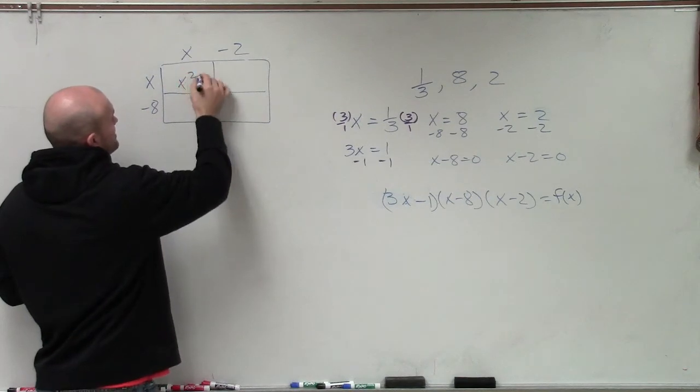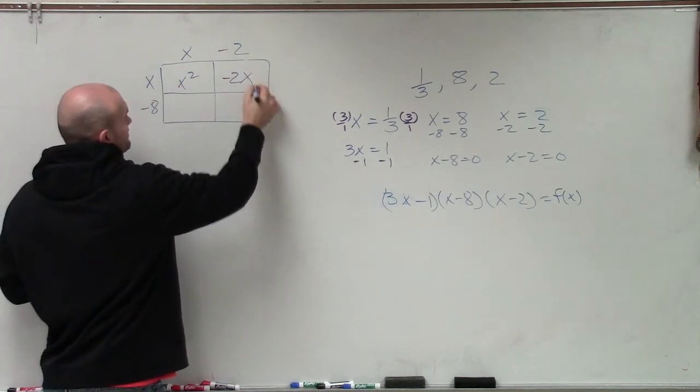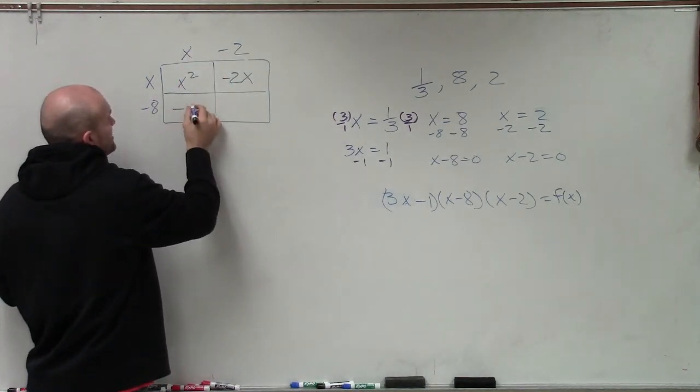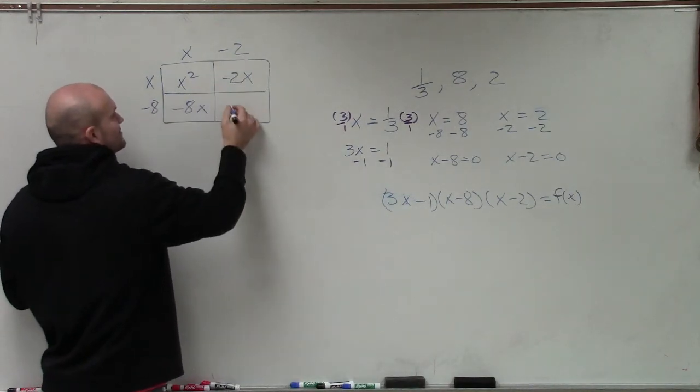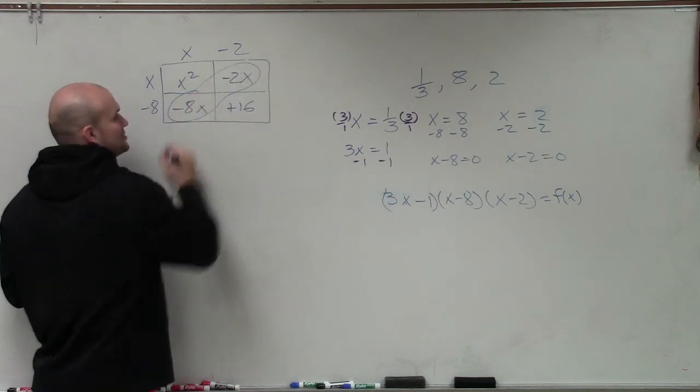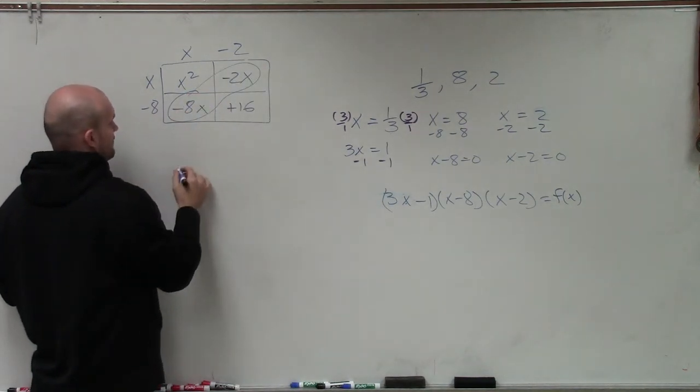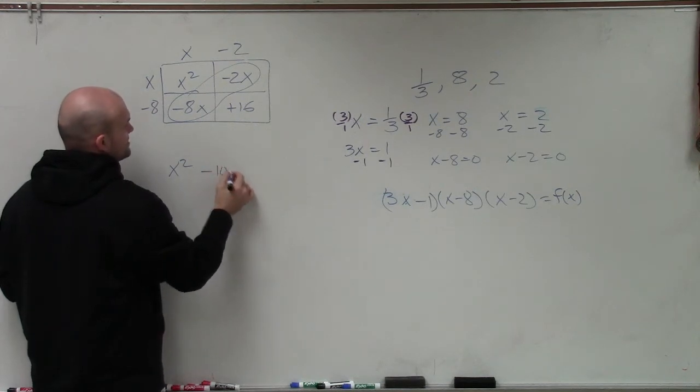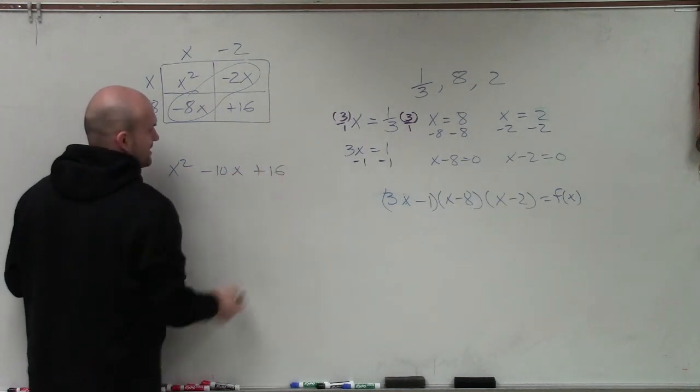x times x is x squared. x times negative 2 is negative 2x. x times negative 8 is negative 8x. And negative 8 times negative 2 is a positive 16. Then I notice I can combine these two, because they have common terms. So therefore, that's going to give me x squared minus 10x plus 16.